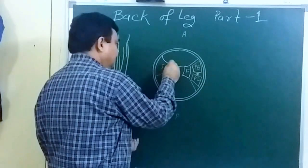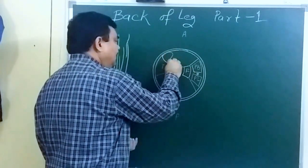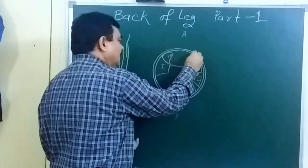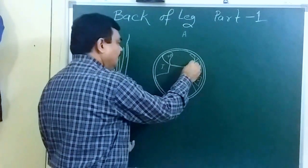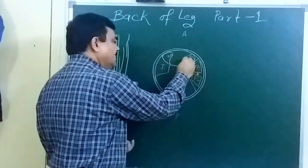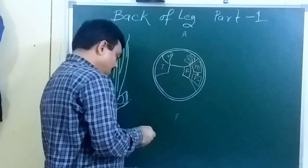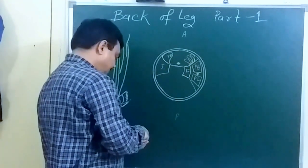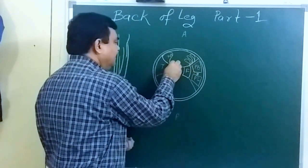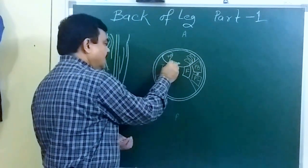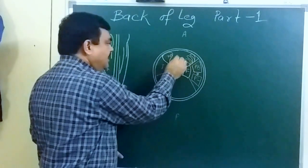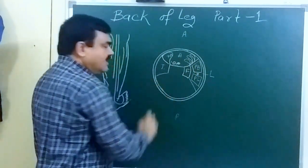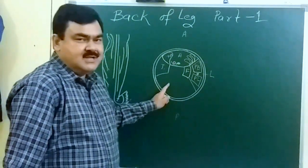In the anterior compartment there is tibialis anterior muscle, extensor digitorum longus, extensor hallucis longus, peroneus tertius, and the deep peroneal nerve. Here is the anterior tibial artery with its accompanying vein. So this is the anterior compartment, this is the lateral compartment, and this is the posterior compartment.